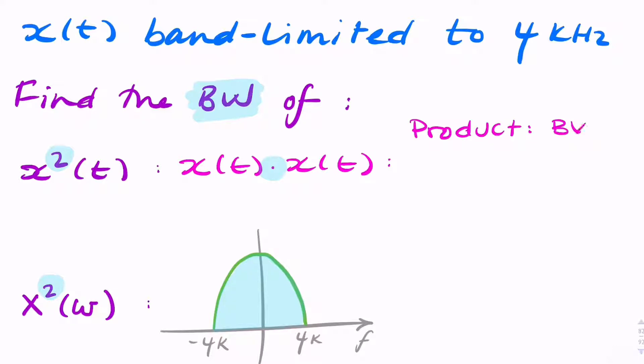the bandwidth is the sum of the two bandwidths. So in this case, your bandwidth would simply be 4 plus 4 equals 8 kHz. That's straightforward.